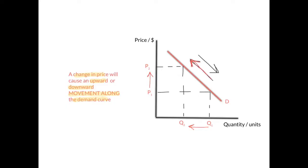You have moved from one point to another point on the curve. Also, when price falls from P2 to P1, this leads to an increase in quantity demanded — not an increase in demand — an increase in quantity demanded from Q2 to Q1, and it leads to a downward movement along the demand curve.